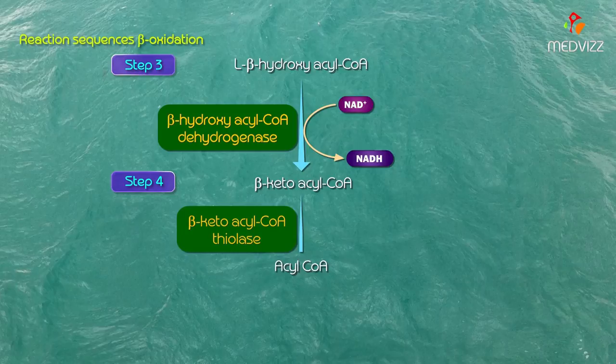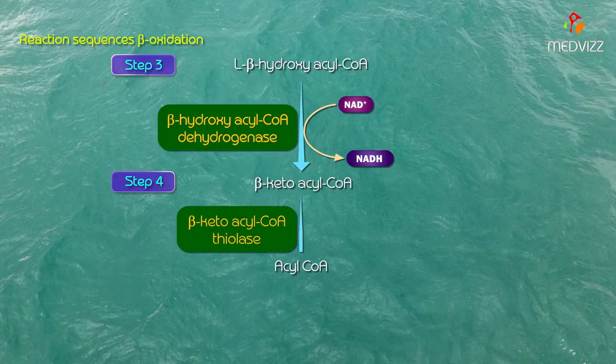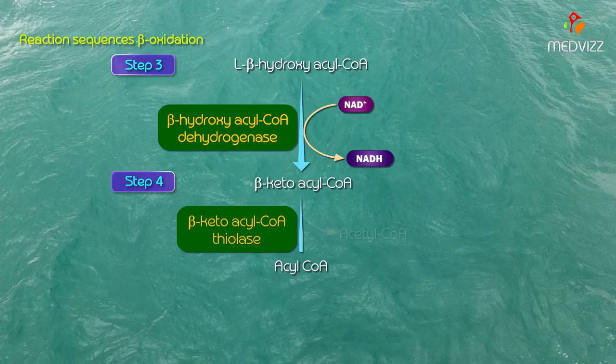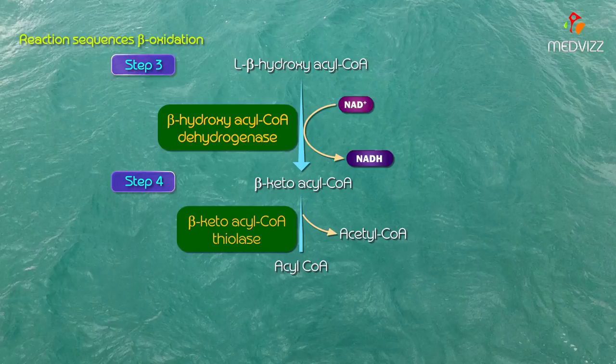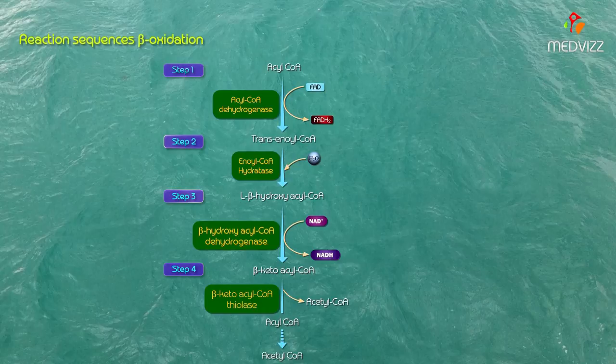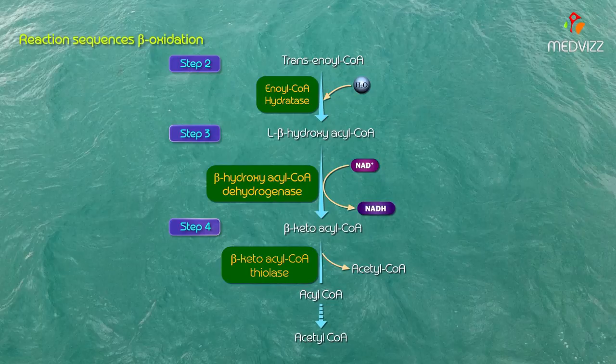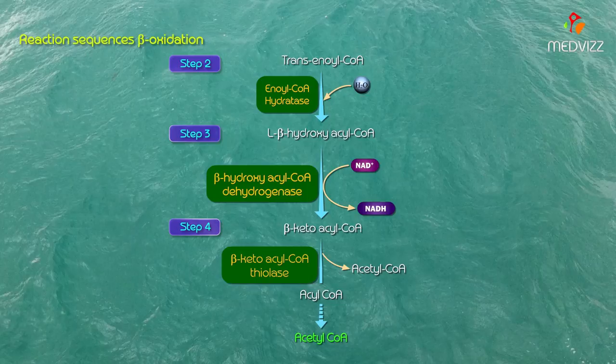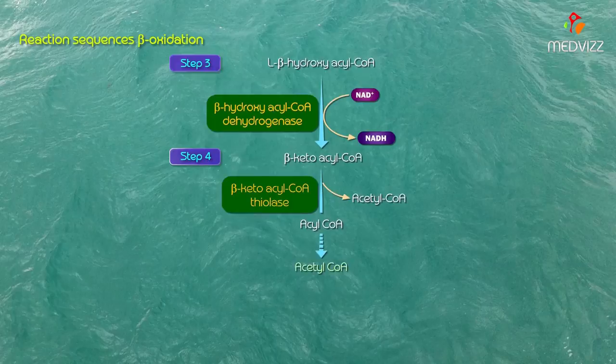In the last step of beta oxidation proper, the enzyme beta-ketoacyl CoA thiolase splits the bond between alpha and beta carbon atoms of beta-ketoacyl CoA. As a result, one acetyl CoA and an acyl CoA with two fewer carbon atoms than the original are produced. Repetition of these four reactions eventually degrades fatty acids containing even numbers of carbons, finally producing acetyl CoA.